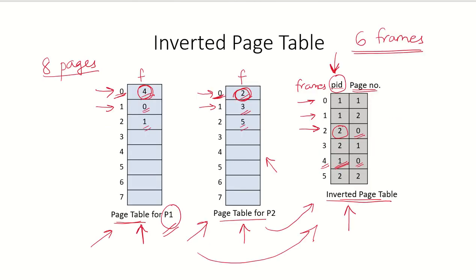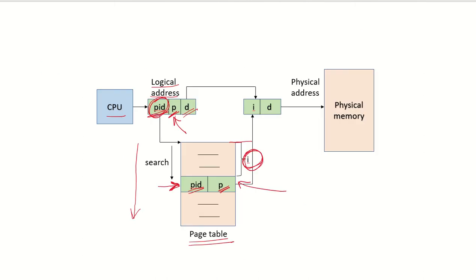Once the matching entry is found, the index I, which is the offset from the base of the inverted page table, gives us the frame number. As shown in the diagram, the entry corresponds to frame 2. Since the inverted page table tracks each frame, I is the frame number, and combined with D, the offset, it computes the physical address used to access physical memory.